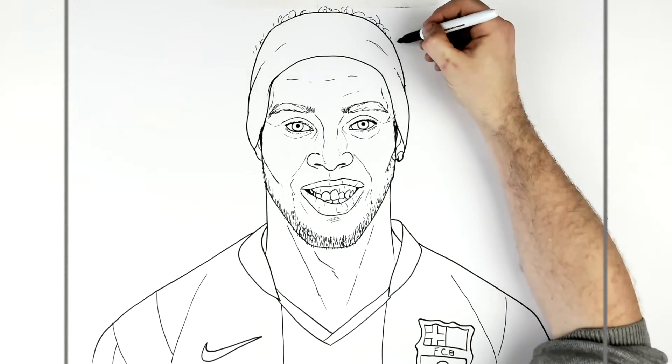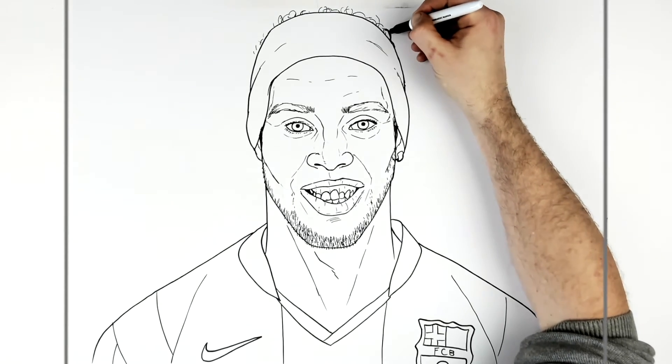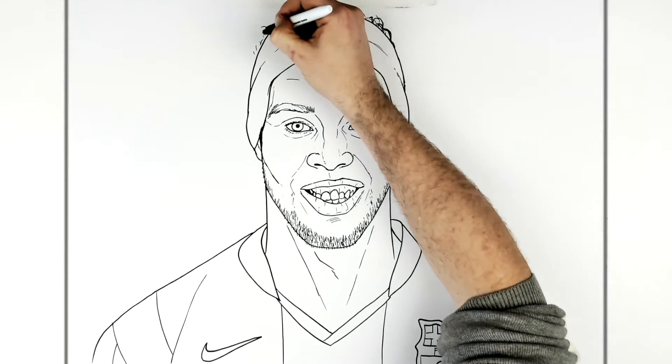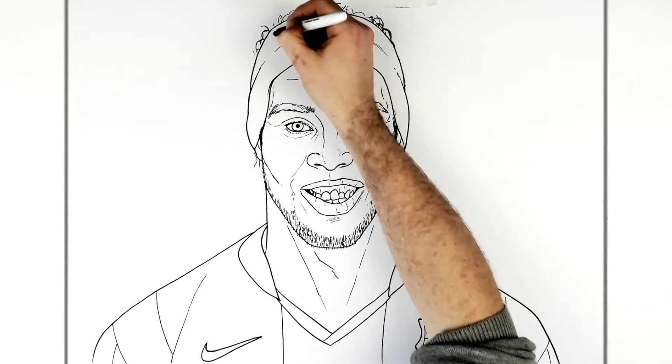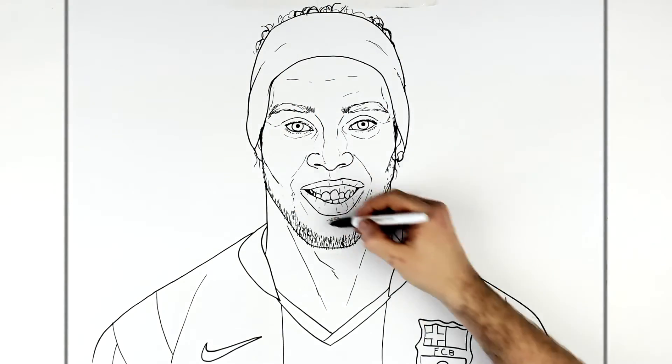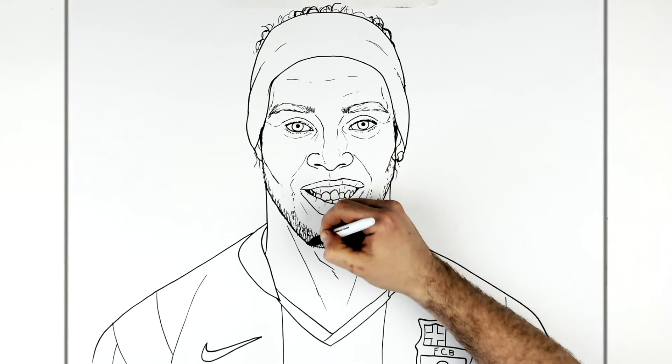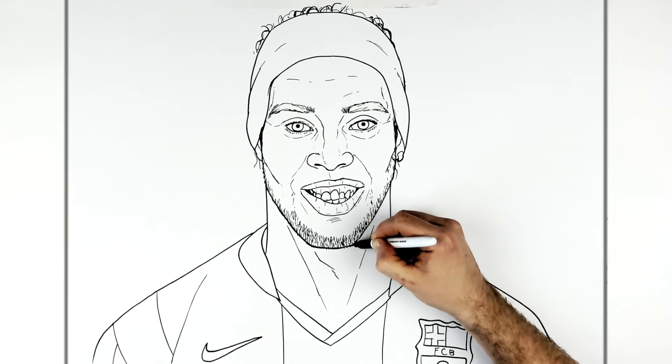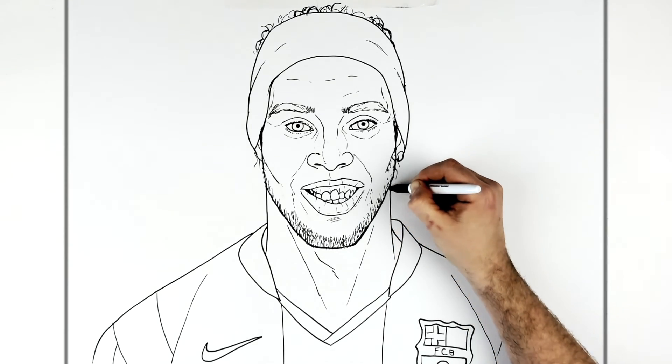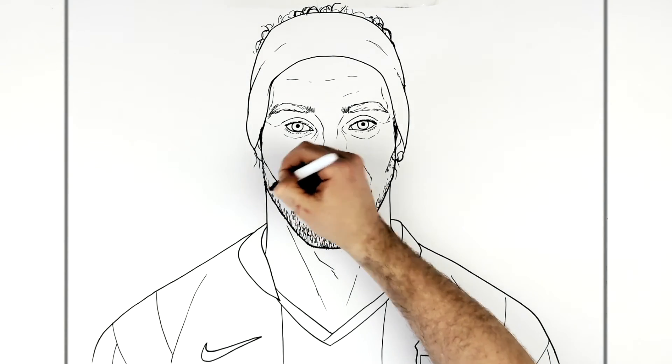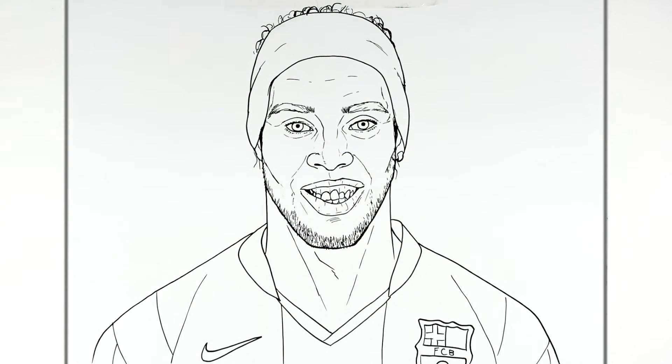So I might just add like some another couple of light bits of stubble just coming off his chin here. And then maybe a bit more hair just sticking out back here. Okay, but I think that'll have to do guys. That is how to draw the great Ronaldinho. Hope it's helpful. Thanks for watching and I'll see you in the next one.